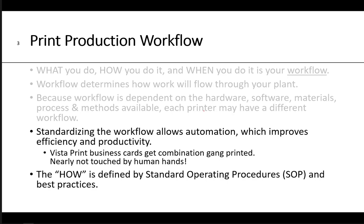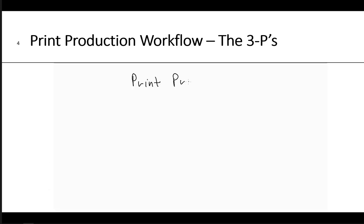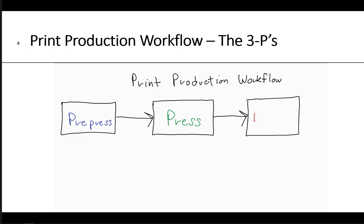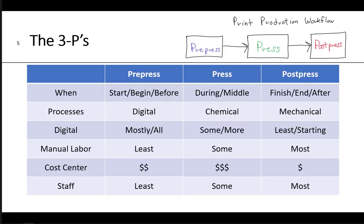Let's illustrate a basic print production workflow using the concept of inputs, process, and output, which becomes pre-press, press, and post-press — the three P's. Pre-press is at the beginning, before the press. Press is the next step, in the middle. And post-press, as its name implies, is when you finish, at the end, after.